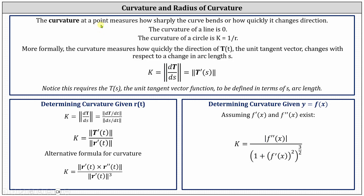The curvature at a point measures how sharply the curve bends or how quickly it changes direction. The curvature of a line is zero. The curvature of a circle is equal to 1 divided by the radius of the circle. More formally, the curvature measures how quickly the direction of T of t, the unit tangent vector, changes with respect to a change in arc length s, and we define curvature as shown here below.